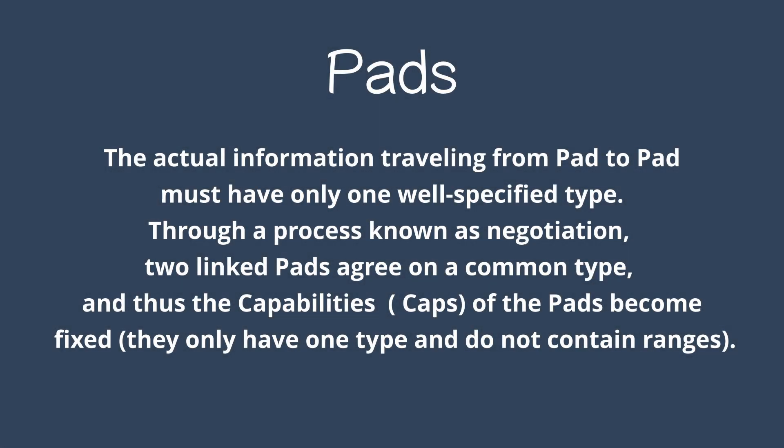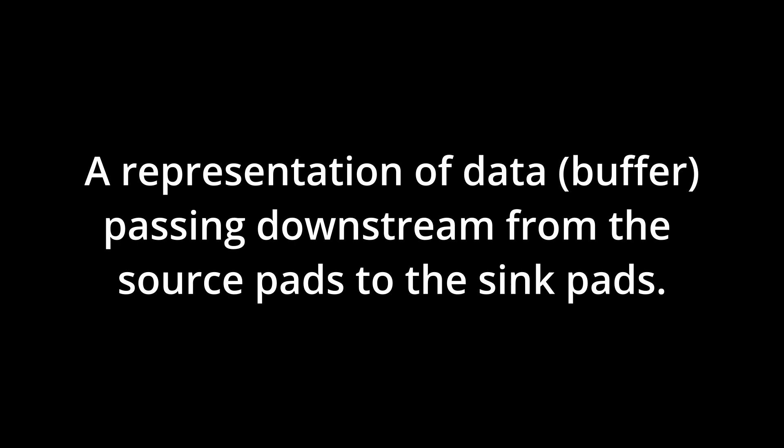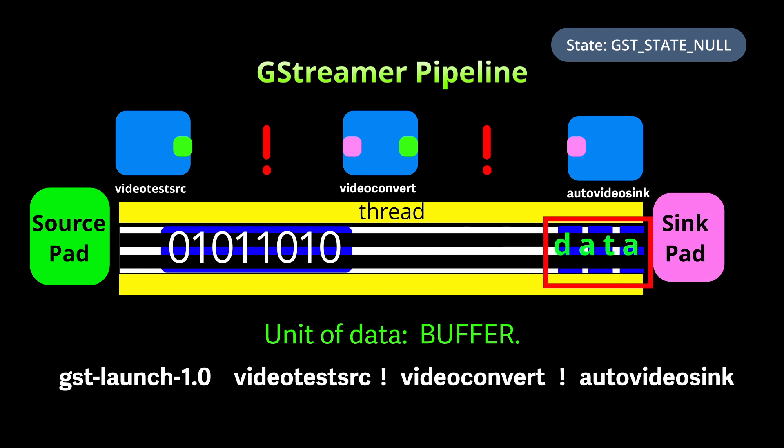The actual information traveling from pad to pad must have only one well-specified type. The source and the sink have to link up, then they have to communicate and negotiate — they say 'I accept what your capabilities are.' If their capabilities are not compatible, it's not going to work. A buffer of data flows to the right down to the sink, with a source pad on the left and a sink pad on the right, all on a thread.